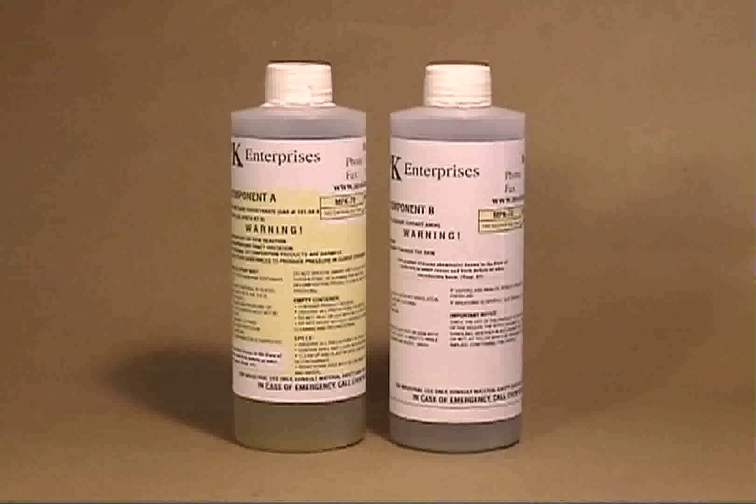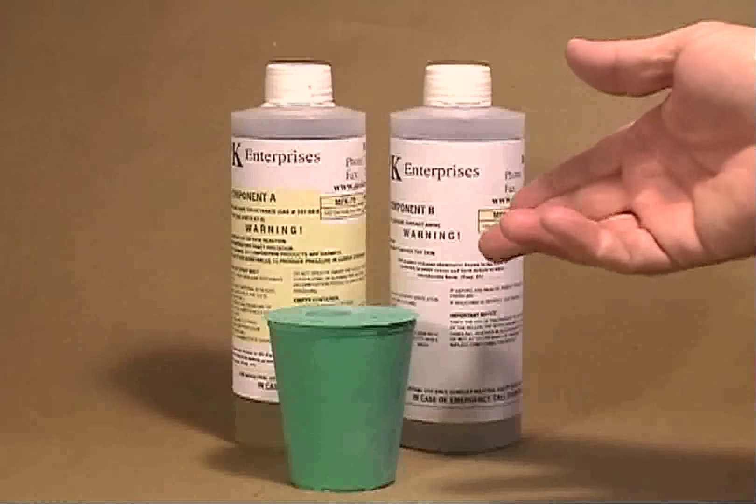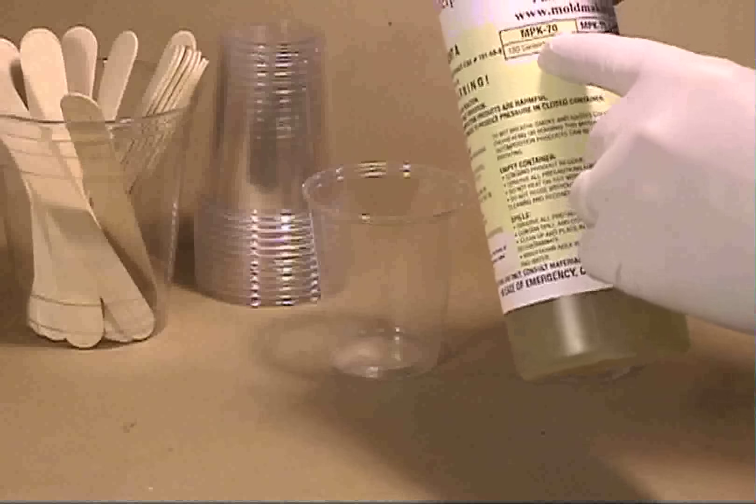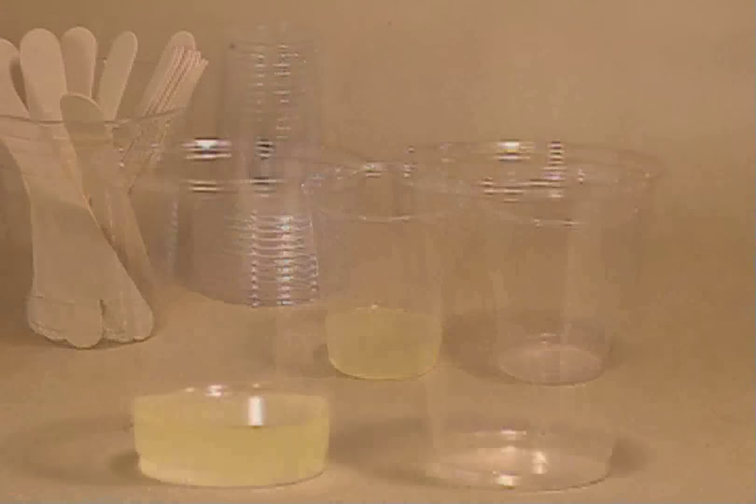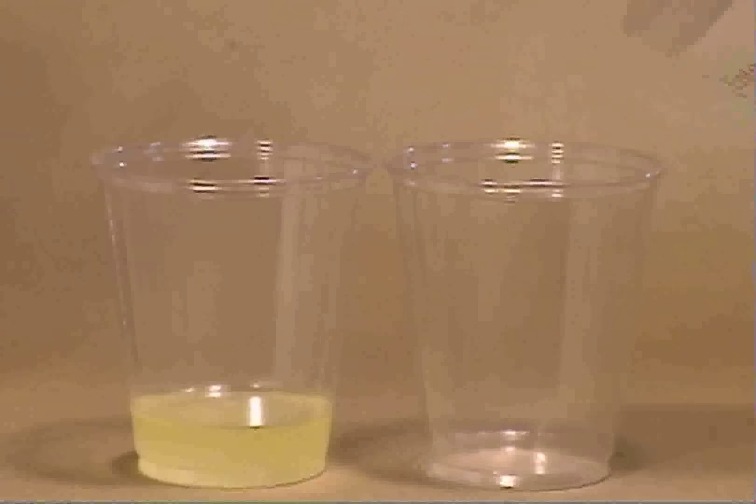I'm using a very inexpensive kit of MPK 70 two pound casting resin. Here's my mold. Put two cups out. Take part A of the MPK 70 casting resin. Pour part A into the first cup. Then pour an equal amount of component B into the second cup.